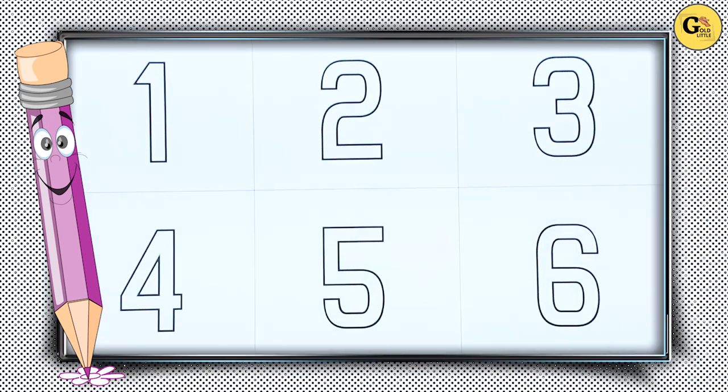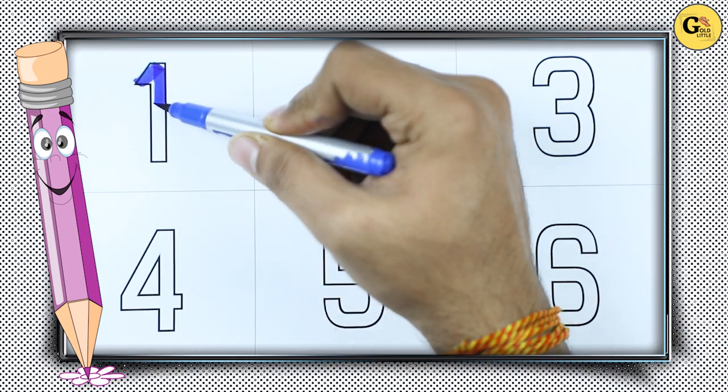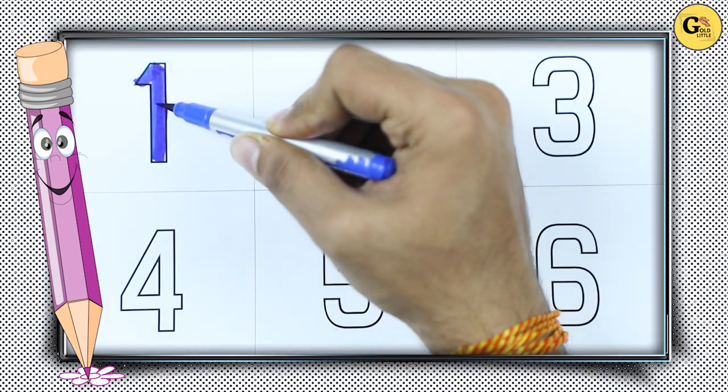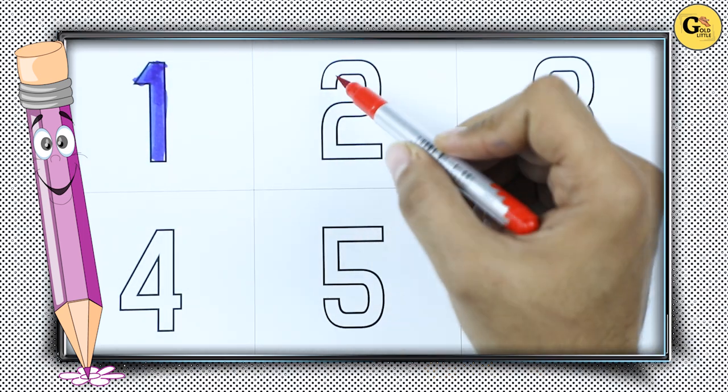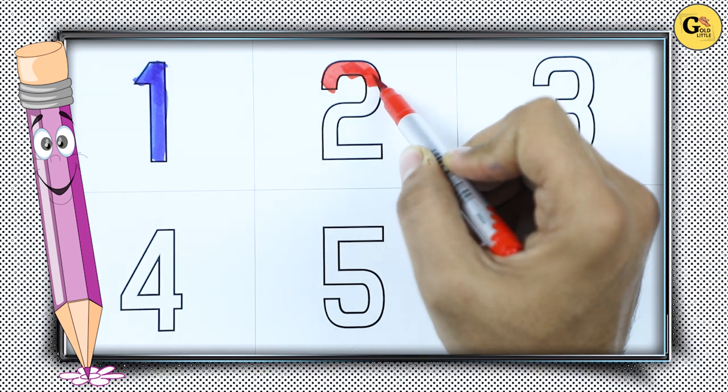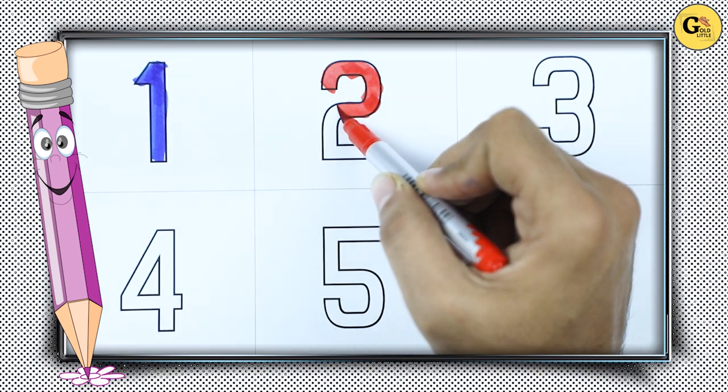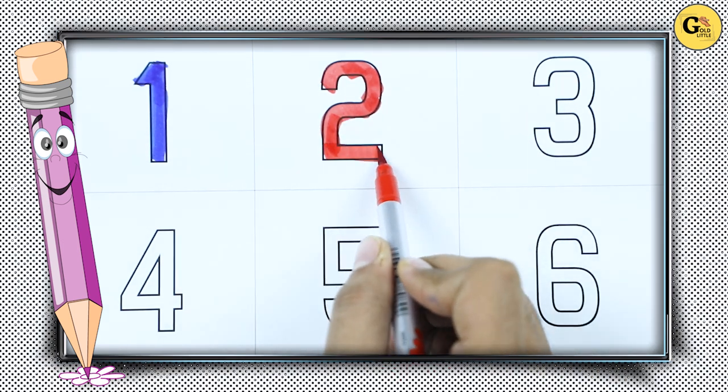Let's start. Number 1. It's number 1 with blue color. Number 2 with red color. It's number 2.